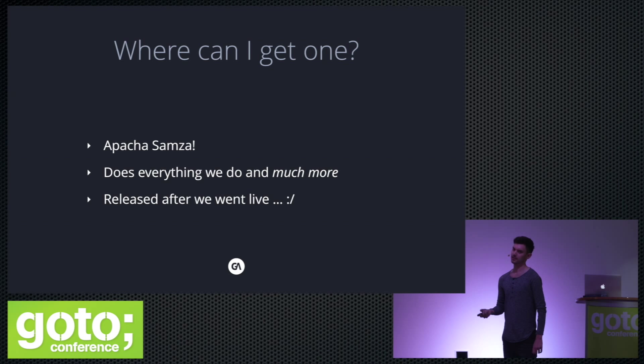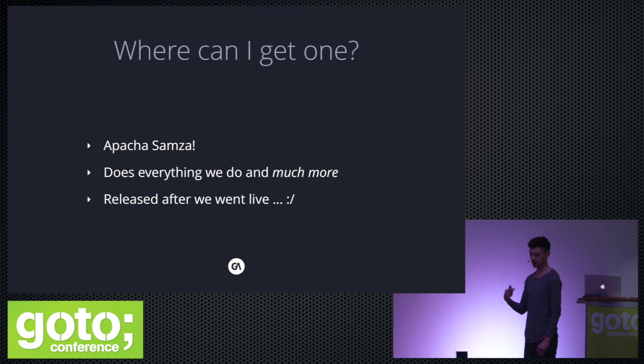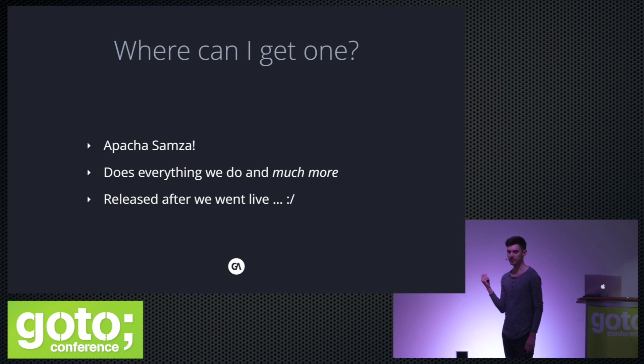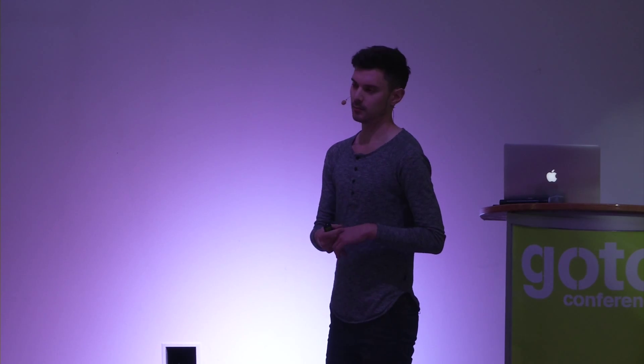If you want a system like this, where can you get one? We built our own in-memory distributed Erlang system because there was no alternative when we started. Today there are alternatives like Apache Samza, which does exactly what you want — and a lot more, and better. If we were starting over today, we would definitely have a hard look at Apache Samza first. It uses Kafka, runs inside Hadoop YARN, and does all of this checkpointing much more nicely, with much better fault tolerance than we have.